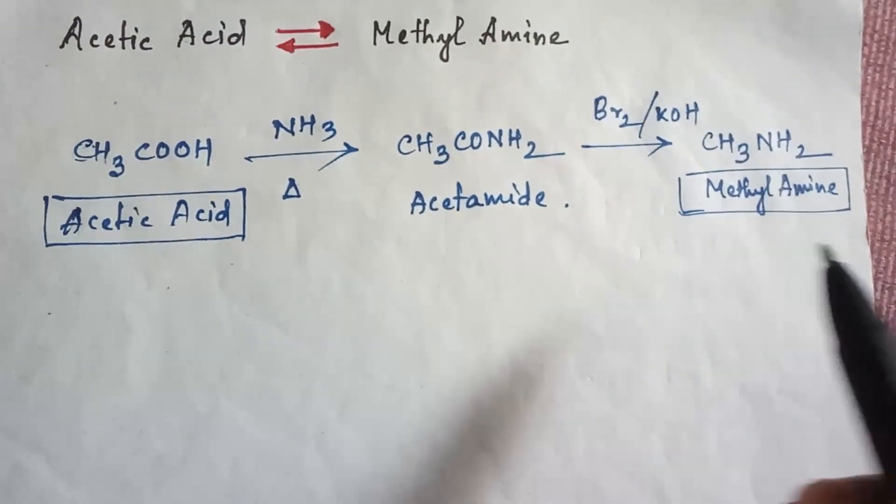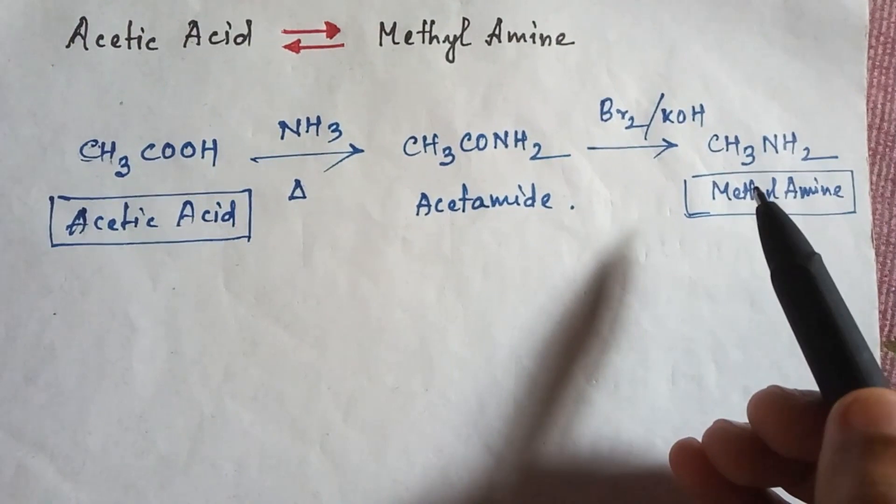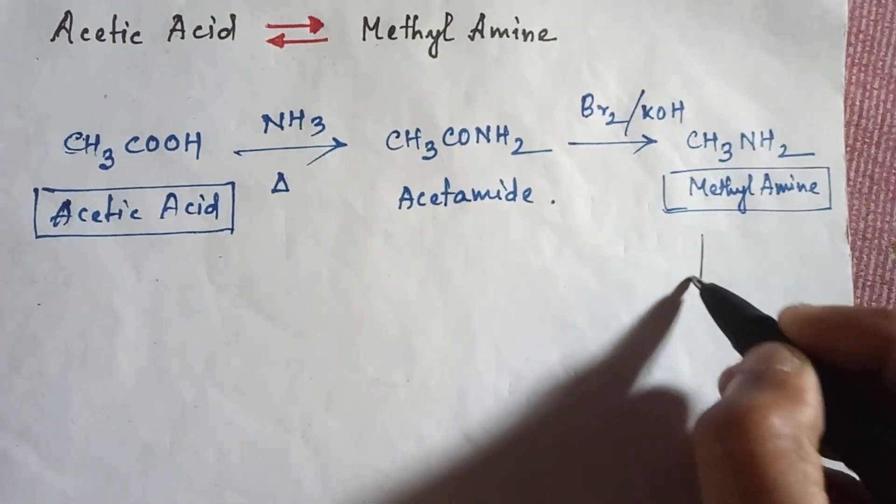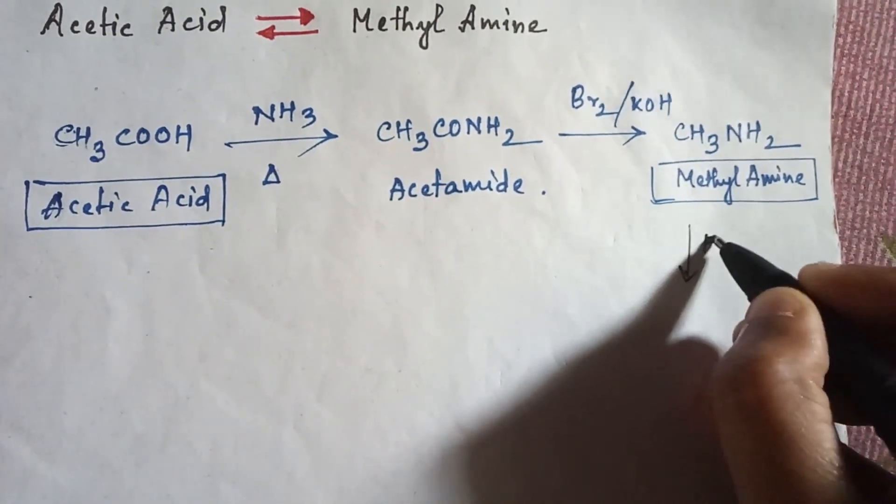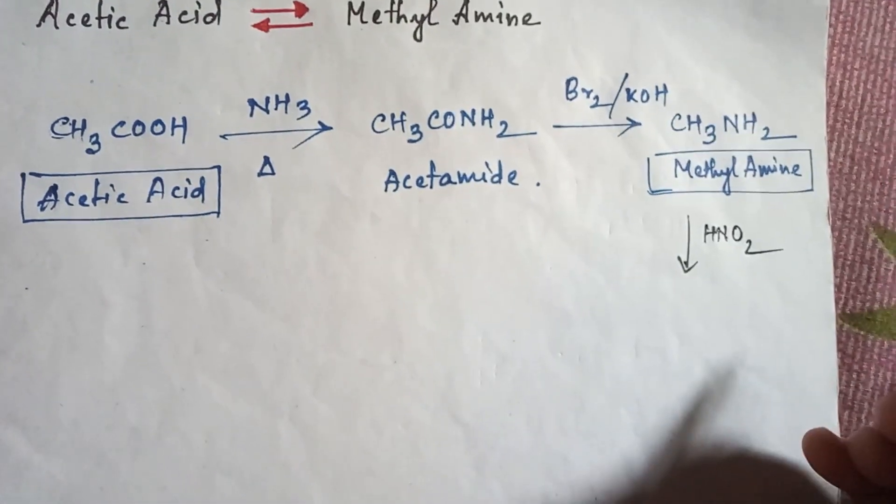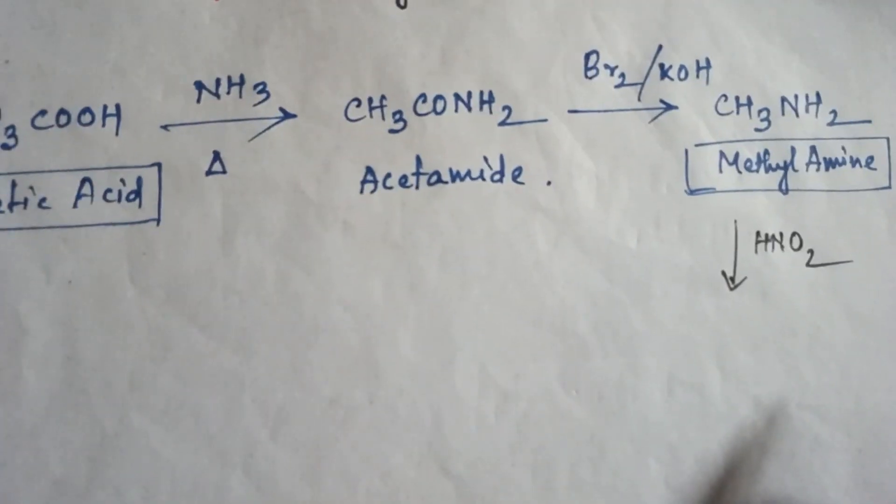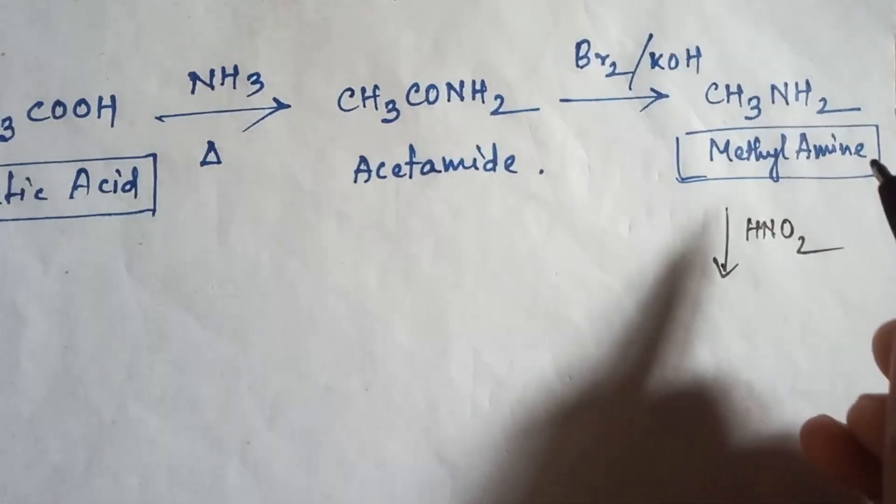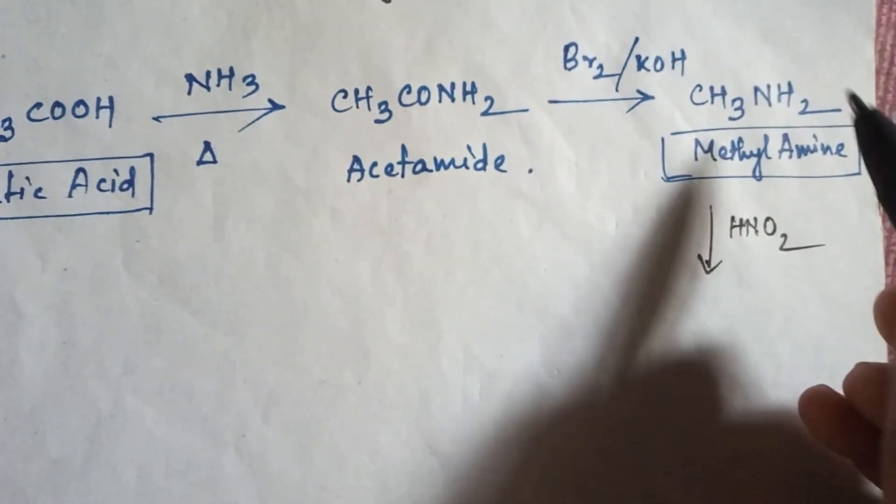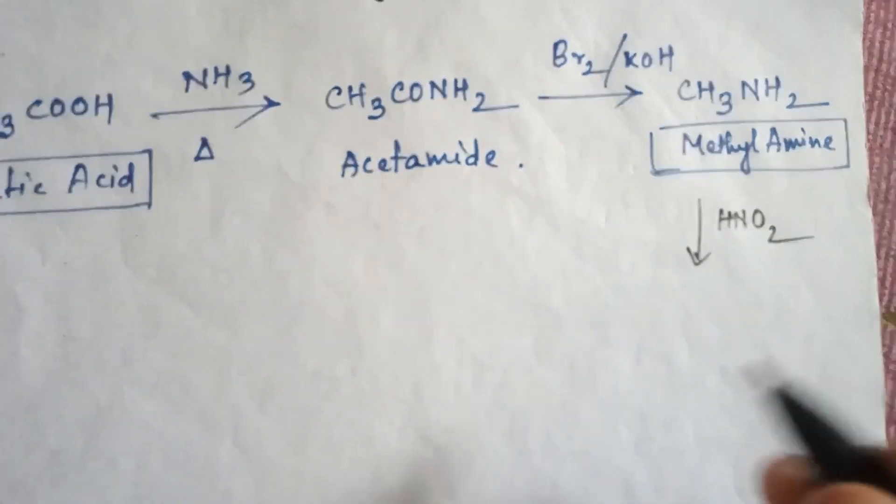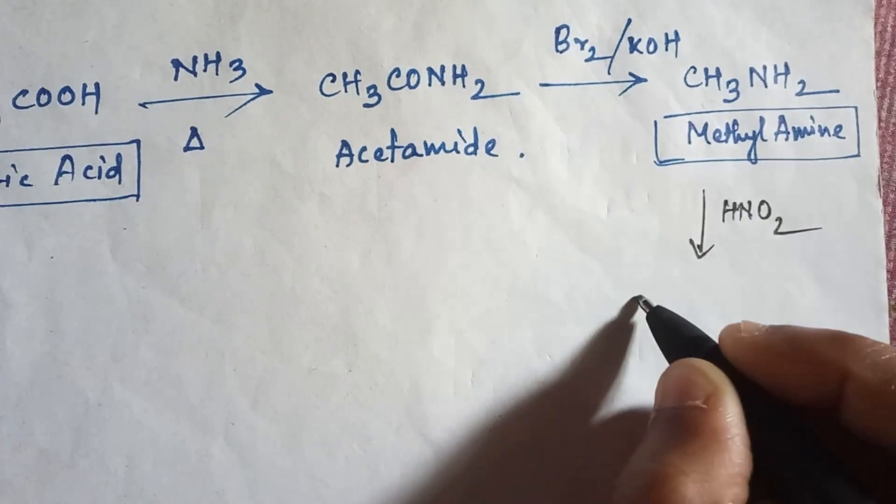So first just add nitrous acid HNO2. If you add nitrous acid in amine, then amine will convert into alcohol. So the compound will be CH3OH, that is methanol or methyl alcohol.